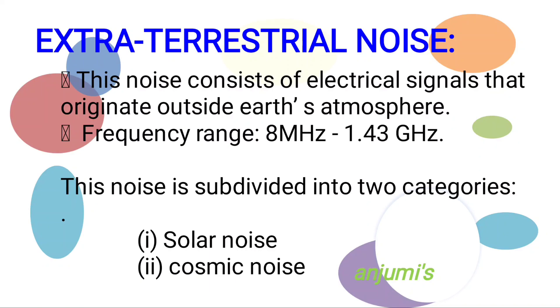Extraterrestrial noise signals are present in space and are generally observed in the frequency range of 8 megahertz to 1.43 gigahertz. There are two types of extraterrestrial noise: solar noise and cosmic noise.